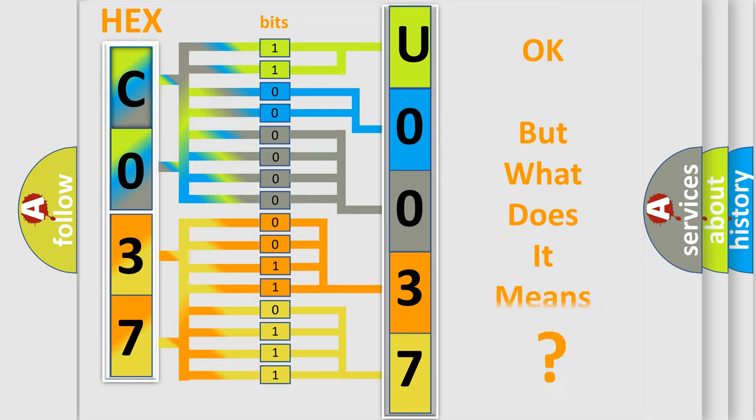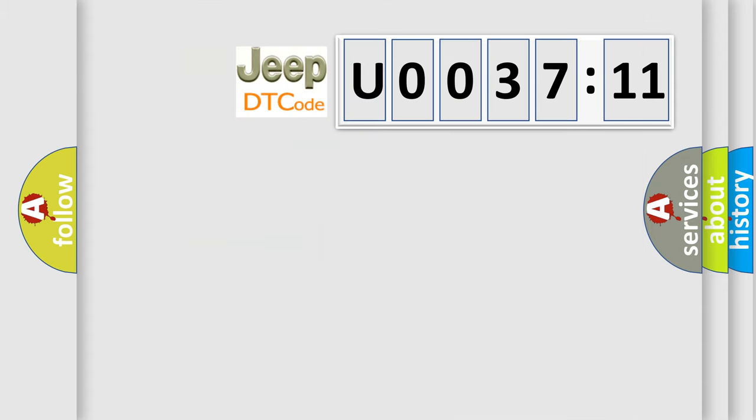The number itself does not make sense to us if we cannot assign information about what it actually expresses. So, what does the diagnostic trouble code U003711 interpret specifically for Jeep car manufacturers?